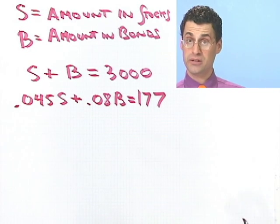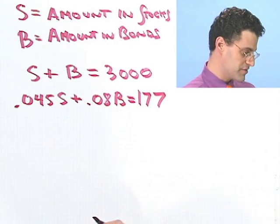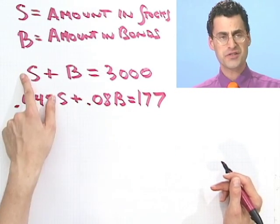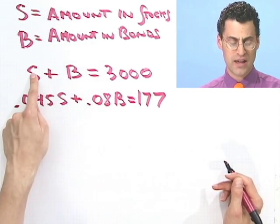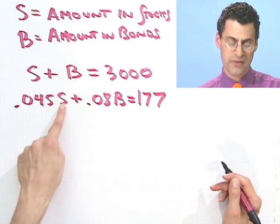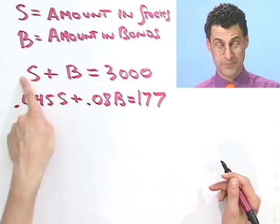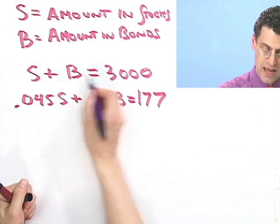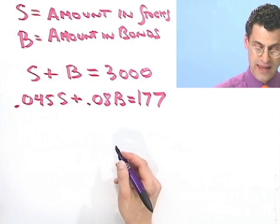Well, notice I have two equations and two unknowns. So I should be able to solve this for B. If I want to solve it for B, the first thing I should do is take this equation and figure out what S is in terms of B to get rid of the S here. So let's use the substitution method and solve this for S.